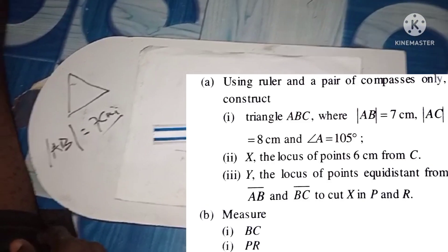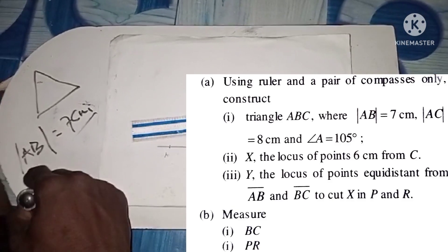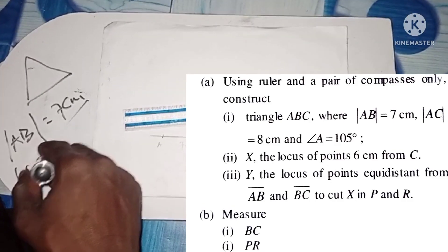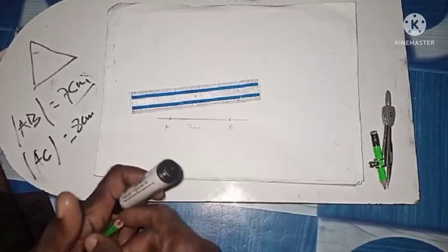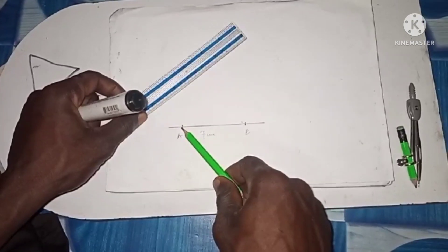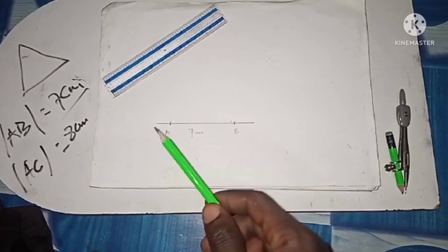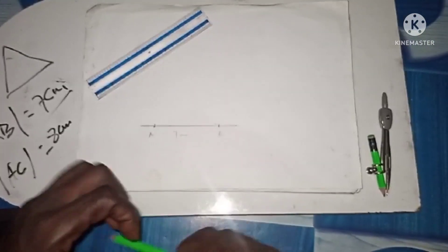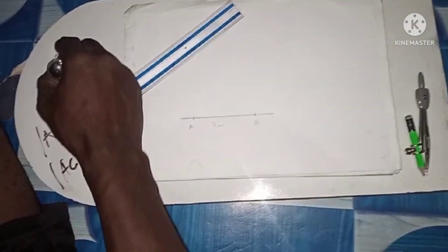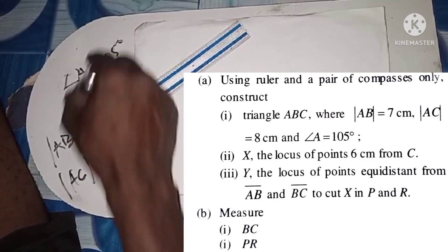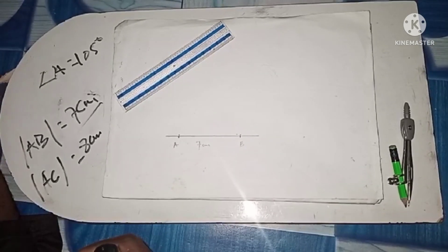The next step says to draw line AC, where AC is equal to eight centimeters. From A to C — we don't know where C is yet, whether it goes up, to the side, or down. So we look at the next piece of information: the angle at A is equal to 105 degrees. The question is how are you going to construct a 105-degree angle — that is the most important thing.